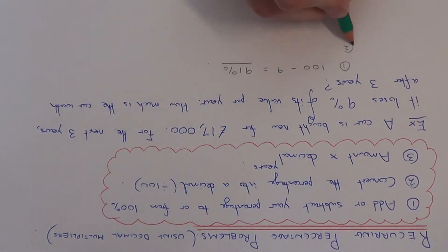The second step is to convert the percentage into a decimal by dividing this percentage by 100. So 91 divided by 100 is 0.91. This is our decimal multiplier.